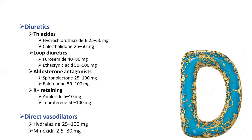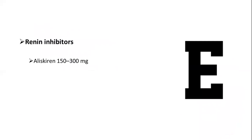The other group starting with D is direct vasodilators, which includes hydralazine and minoxidil. Finally, E stands for renin inhibitors, which includes aliskiren.